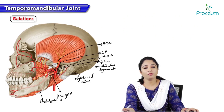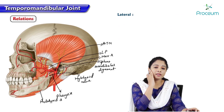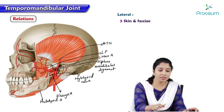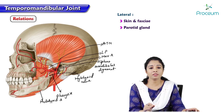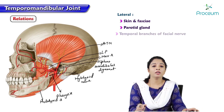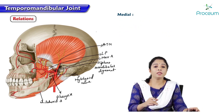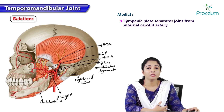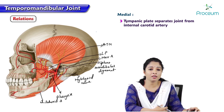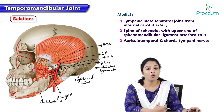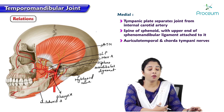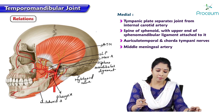Regarding the relations of the temporomandibular joint: laterally it is covered by the skin, fascia, parotid gland, and temporal branches of the facial nerve. Medially it is related to the tympanic plate, which separates the joint from the internal carotid artery, and to the spine of the sphenoid with the upper end of the spinomandibular ligament. The auriculotemporal nerve and chorda tympani nerve are also medial relations, along with the middle meningeal artery.